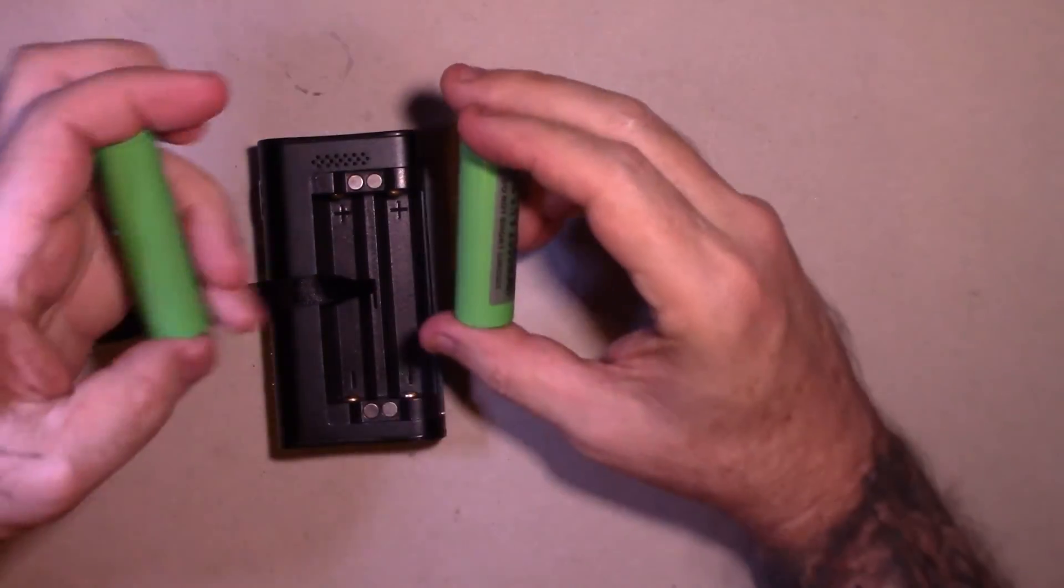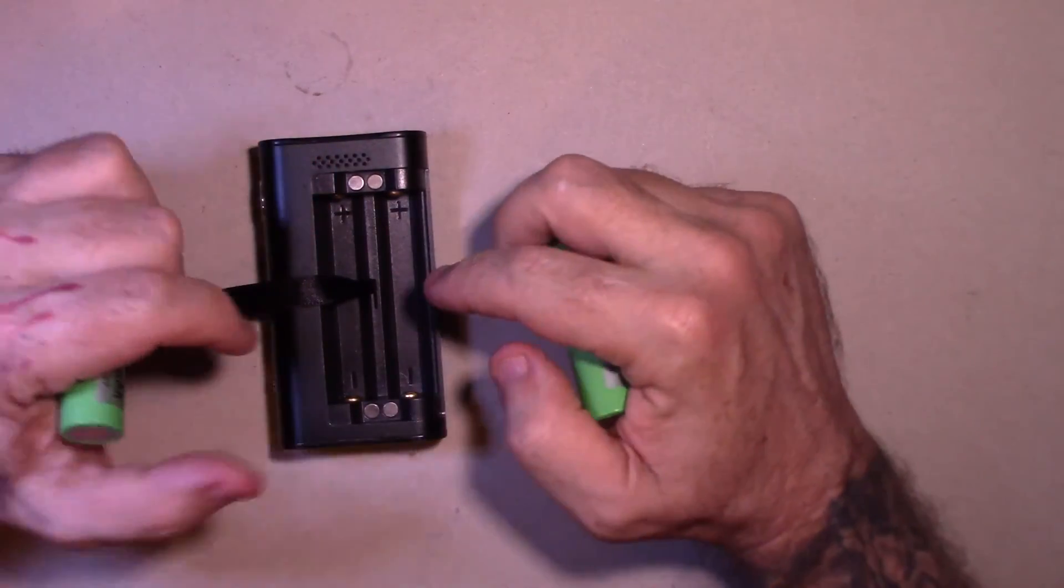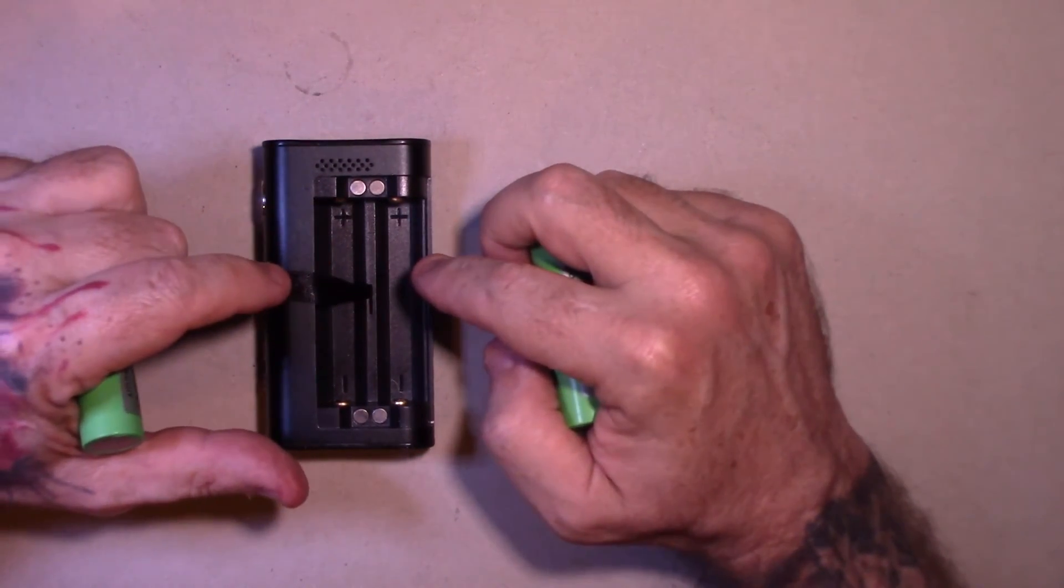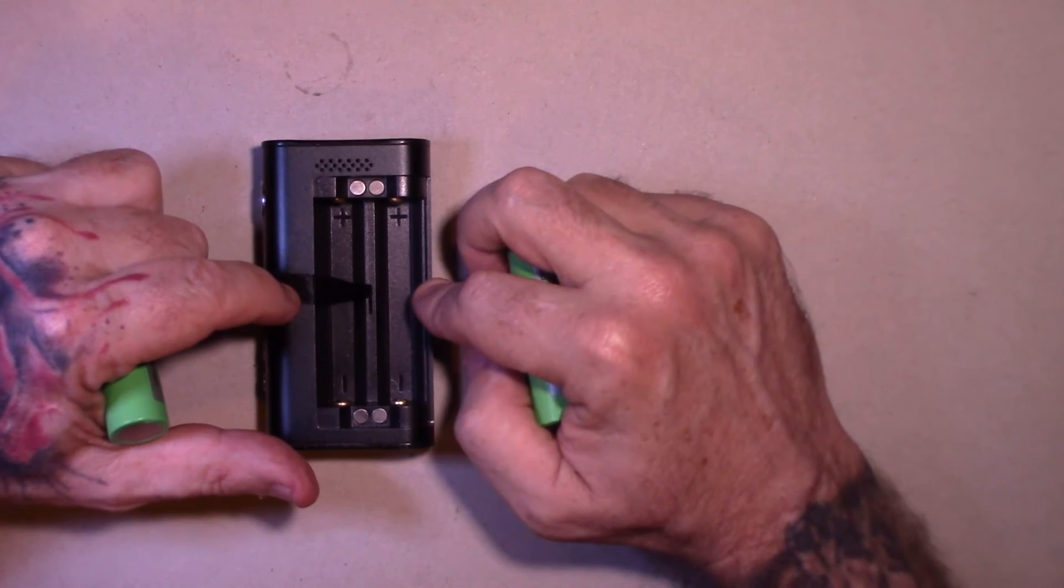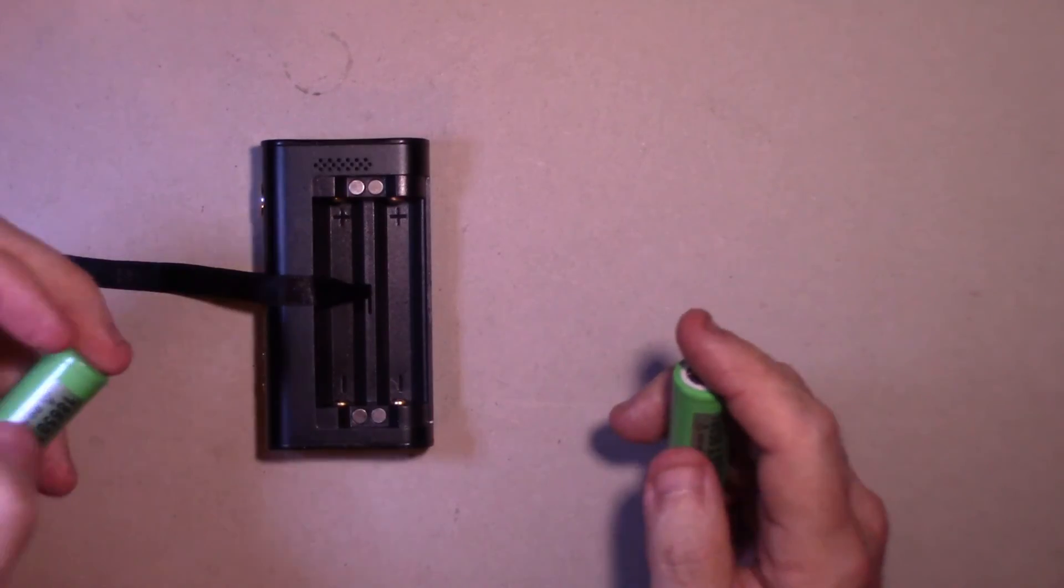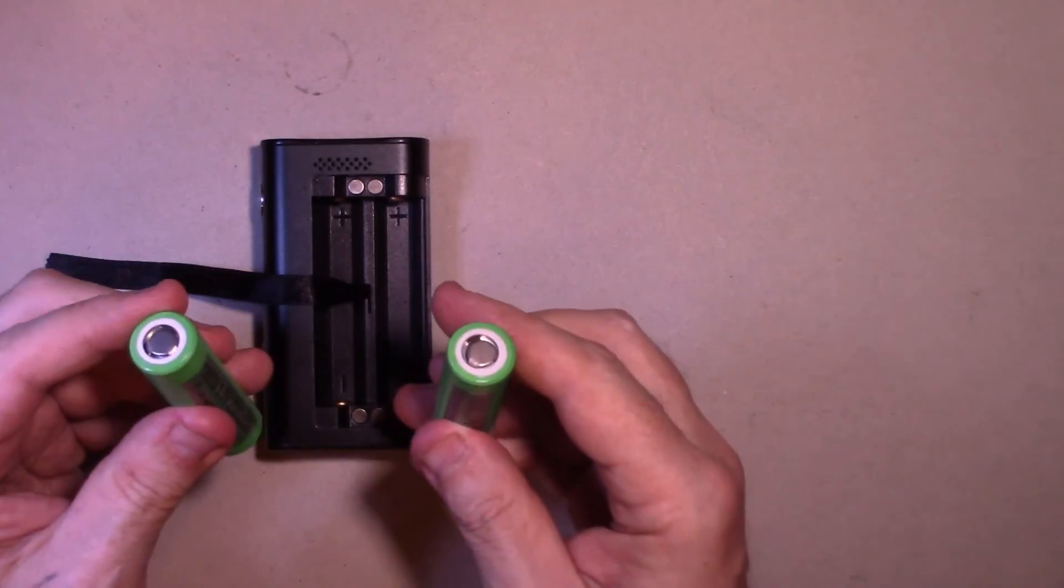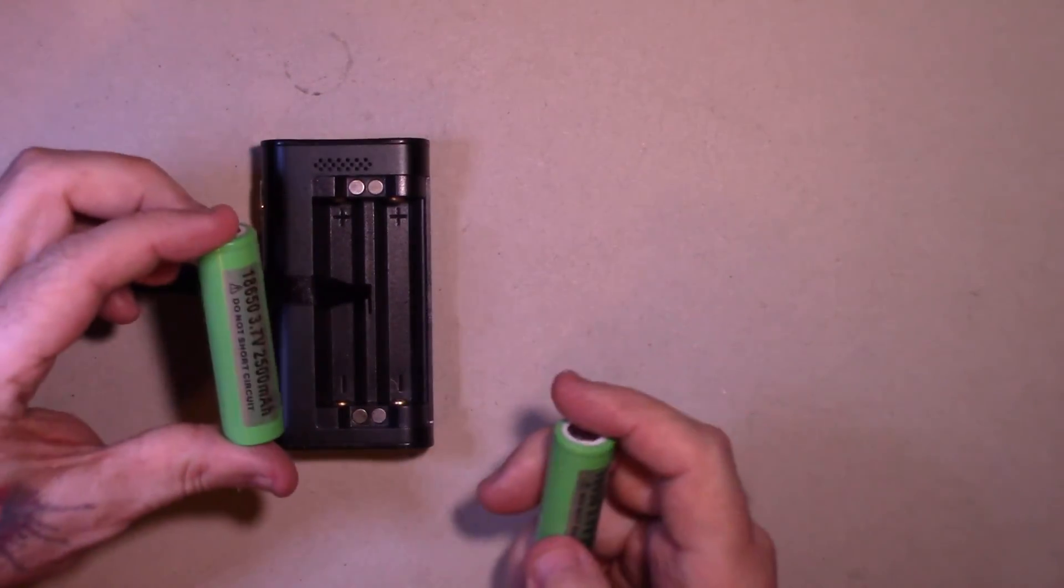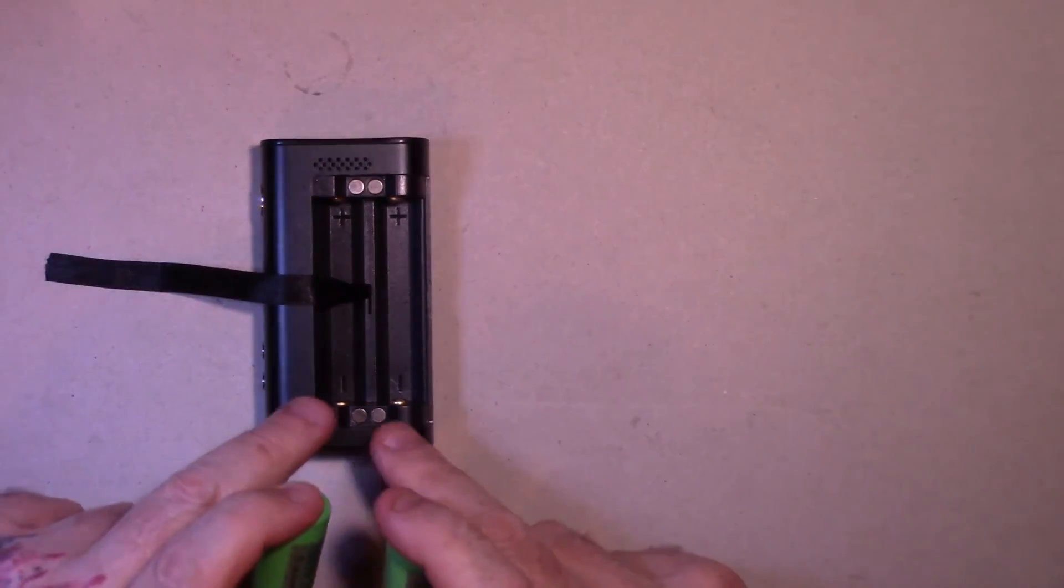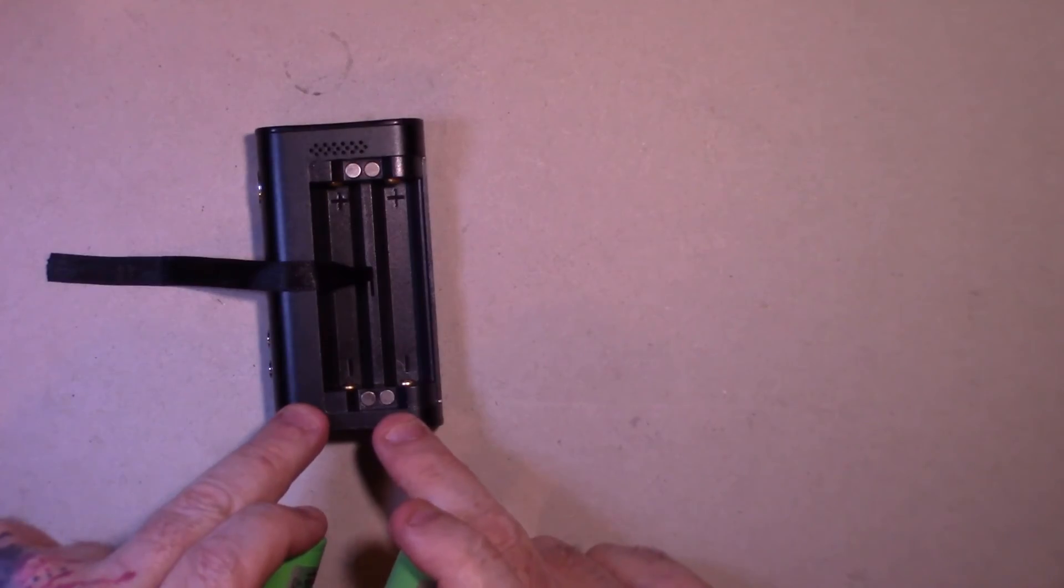Now the next thing is mods are wired two ways. They are either wired in parallel or in series. In parallel, both the positives go the same way. So in this case, this one is in parallel: positive, positive, negative, negative. So the batteries go in the same way.